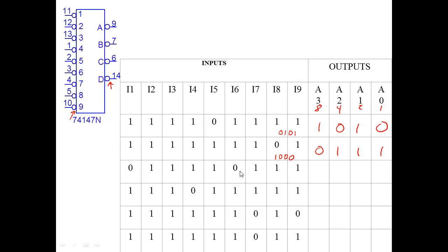Notice here we have two inputs tied low. The 74147 is a priority encoder — even if multiple inputs are tied low, it always picks the highest one. So in this case with both six and a lower input tied low, it picks six. Six is four plus two, so binary 0110, inverted to 1001.